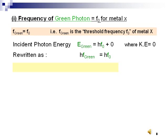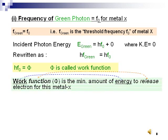The threshold photon energy can be written as a work function. So, what is the work function? Work function is the minimum amount of energy to release electrons from matter X.